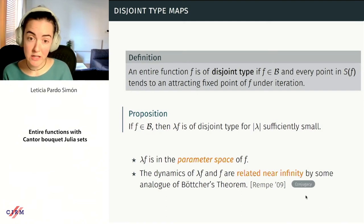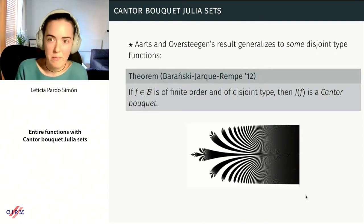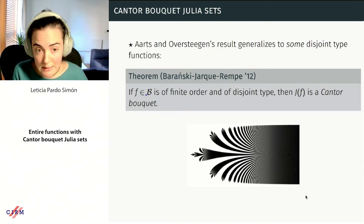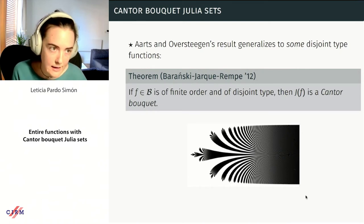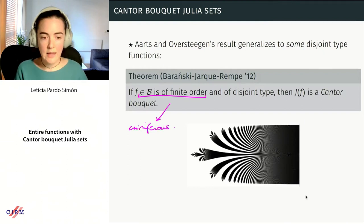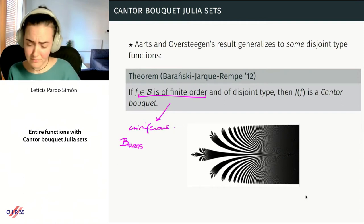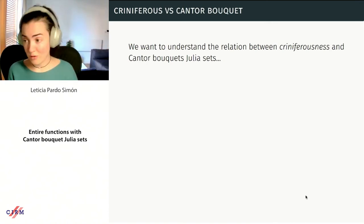The result of Artz and Oberstegen generalizes to some disjoint type functions. In 2020, Paransky, Jarki, and Rempe showed that if we have a function in class B of finite order and disjoint type, then the Julia set is a Cantor bouquet — in particular, the theorem of Artz and Oberstegen is included here. We also noted a few slides back that these maps are criniferous. Moreover, this theorem also holds for maps satisfying a uniform head-start condition. Our goal is to understand the relation between having criniferous maps and a Cantor bouquet Julia set.